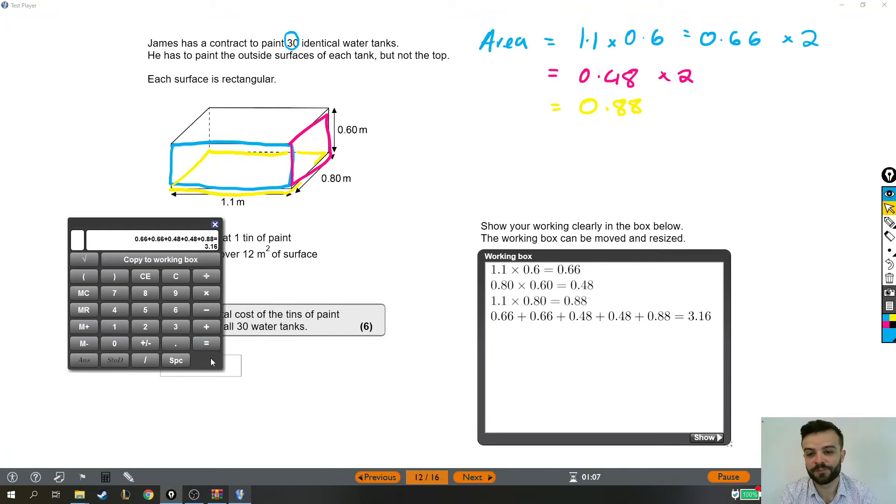However, James's contract was to paint 30 of those tanks. It says it right at the top here - I circled it because it's easy to forget. But that's what one tank would be. I'm just going to times that by 30 because that's the area that needs painting on 30 tanks.